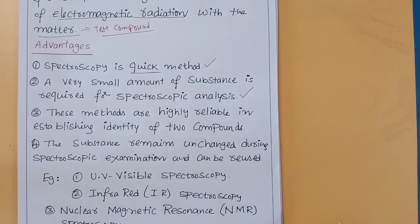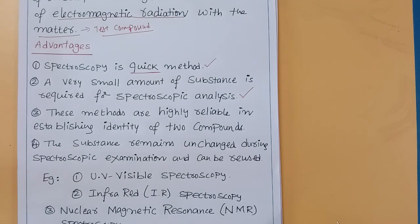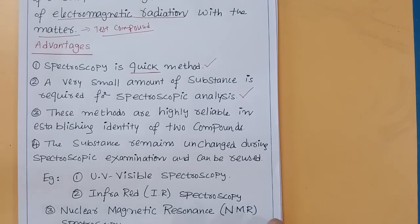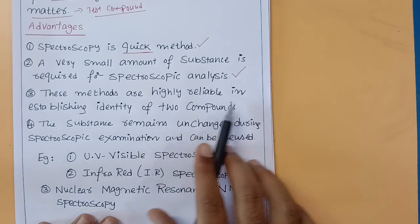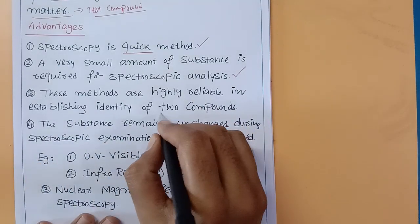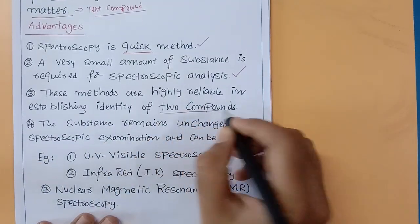Only a small quantity is needed — as little as 1 milliliter or microliters, or as little as 1 milligram or 10 milligrams. Even with a very small amount of substance, you can perform spectroscopic analysis. Third, these methods are highly reliable in establishing the identity of two compounds.